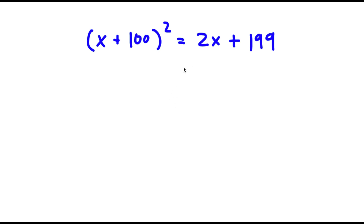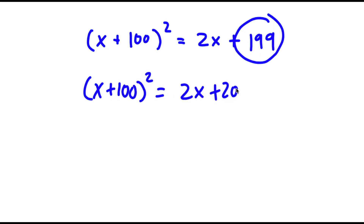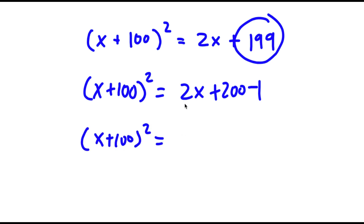So in this problem, I have x plus 100 squared is equal to 2x plus 199. To solve this, I'm going to first start by rewriting 199 as 200 minus 1. So now I have x plus 100 squared is equal to 2x plus 200 minus 1. From here, I can factor out 2 from 2x plus 200. So now I have 2 times x plus 100 minus 1.